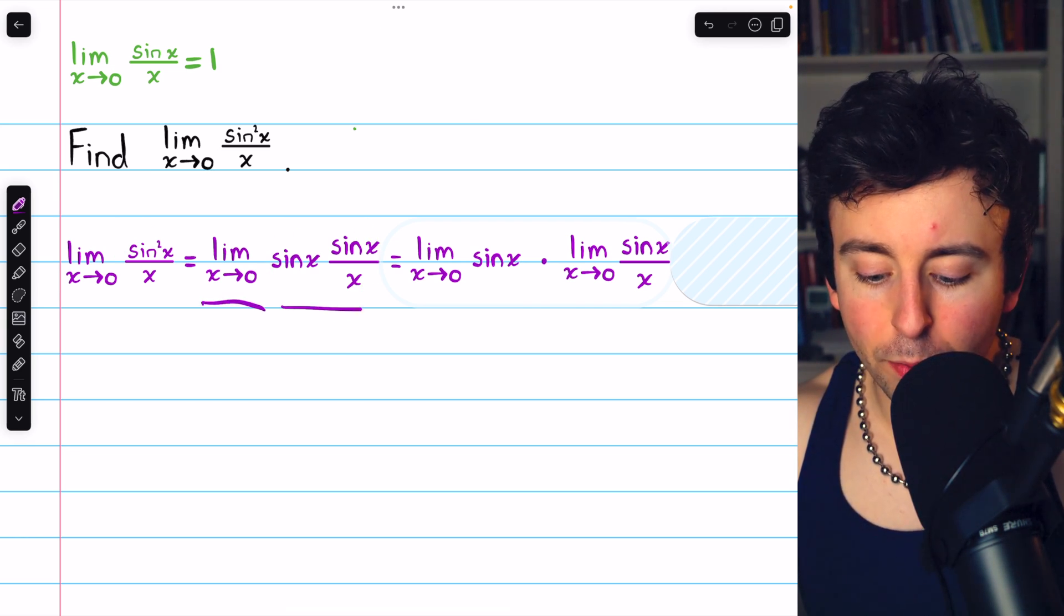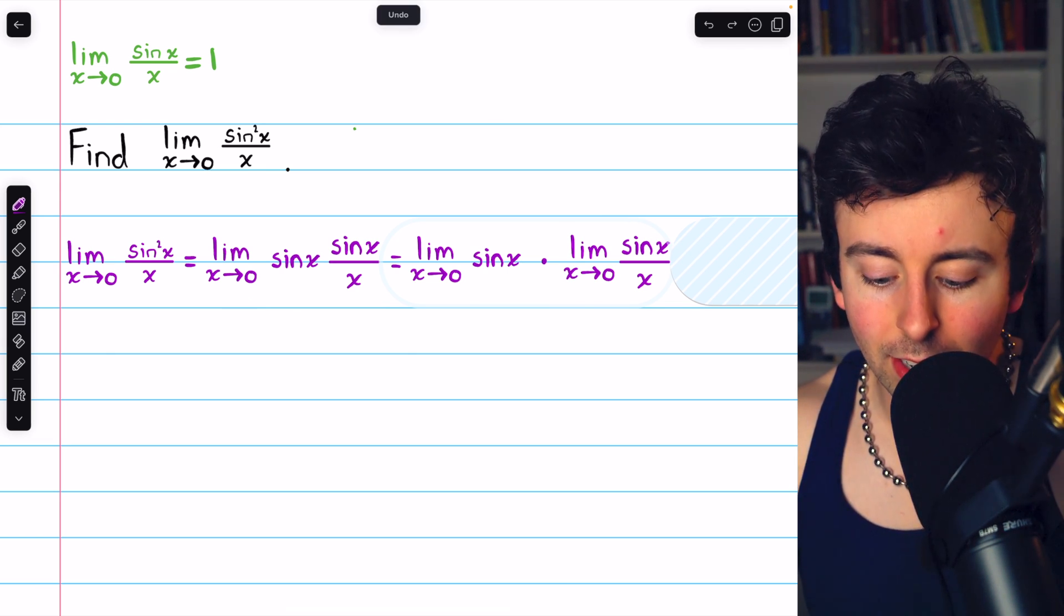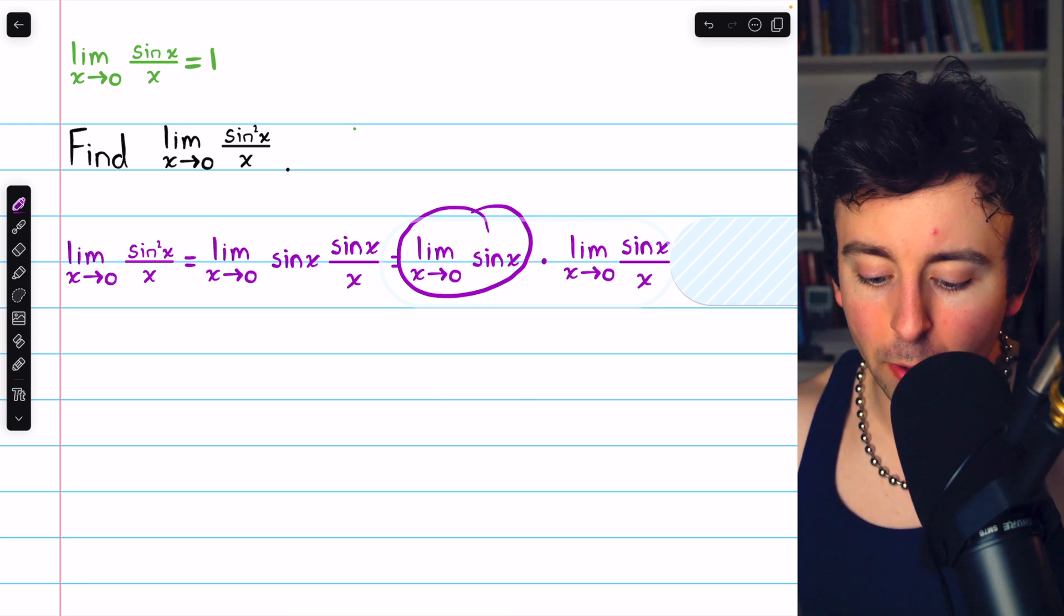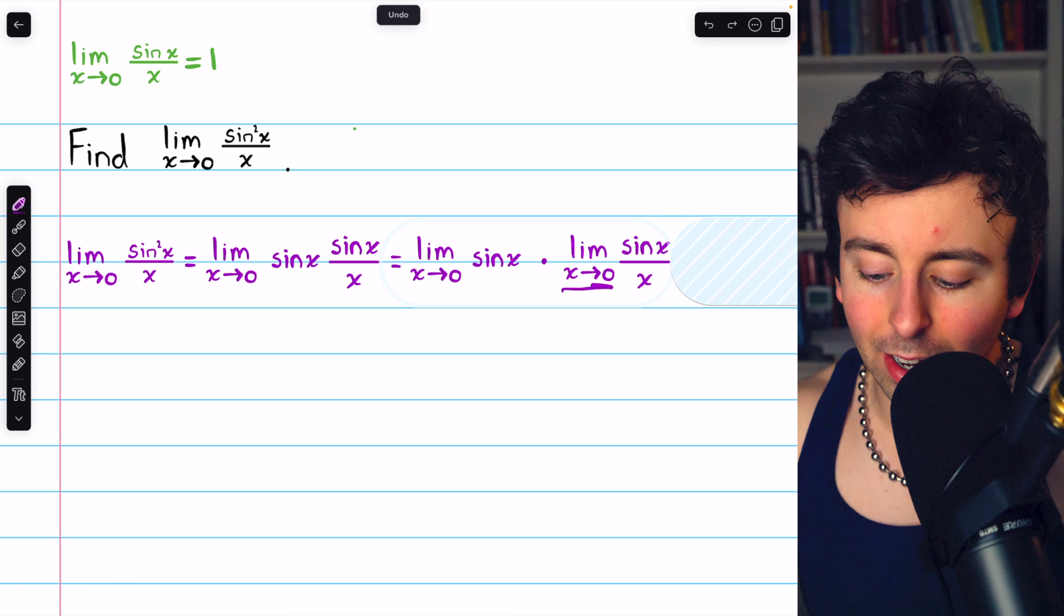Then the limit of a product is the product of the limits, provided that the limits exist. So we rewrite this as the limit of sine x as x approaches 0, multiplied by the limit of that other term, sine x over x, as x approaches 0.